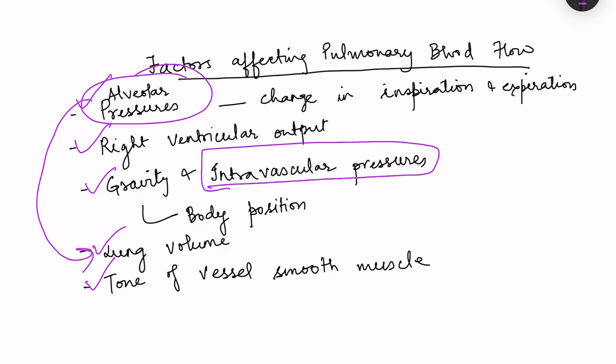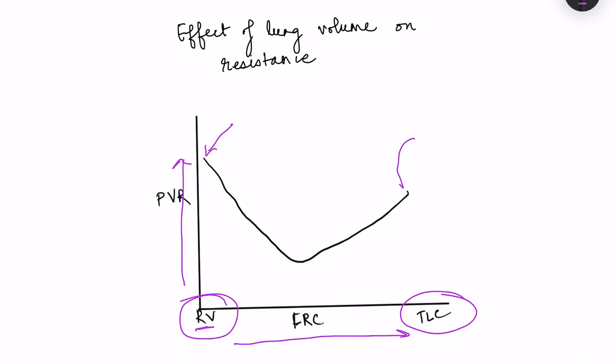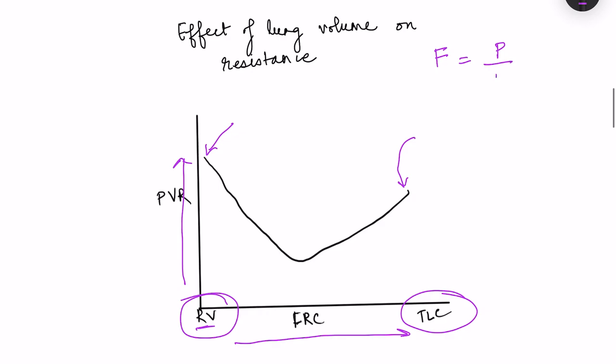A graph showing the effect of lung volume on pulmonary vascular resistance: the x-axis shows increasing lung volume from residual volume (RV) through functional residual capacity (FRC) to total lung capacity (TLC), and the y-axis shows pulmonary vascular resistance. At residual volume, resistance is high; at total lung capacity, resistance is also high; and resistance is lowest at FRC.